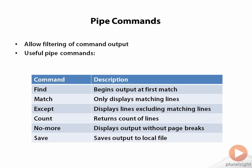Pipe match will only display the lines that you specified. Pipe except will display everything except the term that you specified. Count will provide a count of the lines. No more will display the entire output without a page break, and save will redirect the output to a file stored on the local file system.